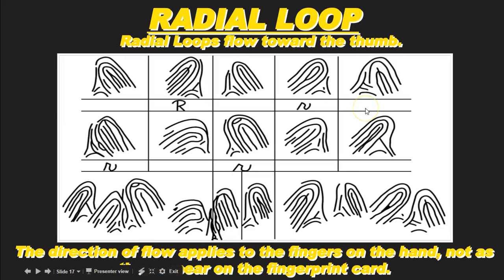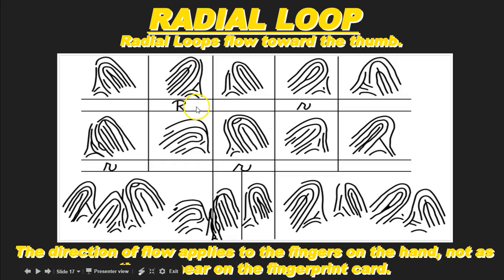What if the loops are radial? For example, looking at the right index finger — this is a loop with a recurve, a delta, and a ridge count. But if I hold my right hand above that fingerprint, the ridges flow in from the thumb side and flow out the thumb side, flowing towards the radius. So this is a radial loop. Instead of putting a slash, we write the letter R underneath it. On the index finger, we write a capital R for a radial loop. On some other finger, like the right ring finger which is also a radial loop, we use a lowercase r. We'll talk about why later when we discuss the Henry system of classification. For now: ulnar loop gets a slash; radial loop gets the letter R.